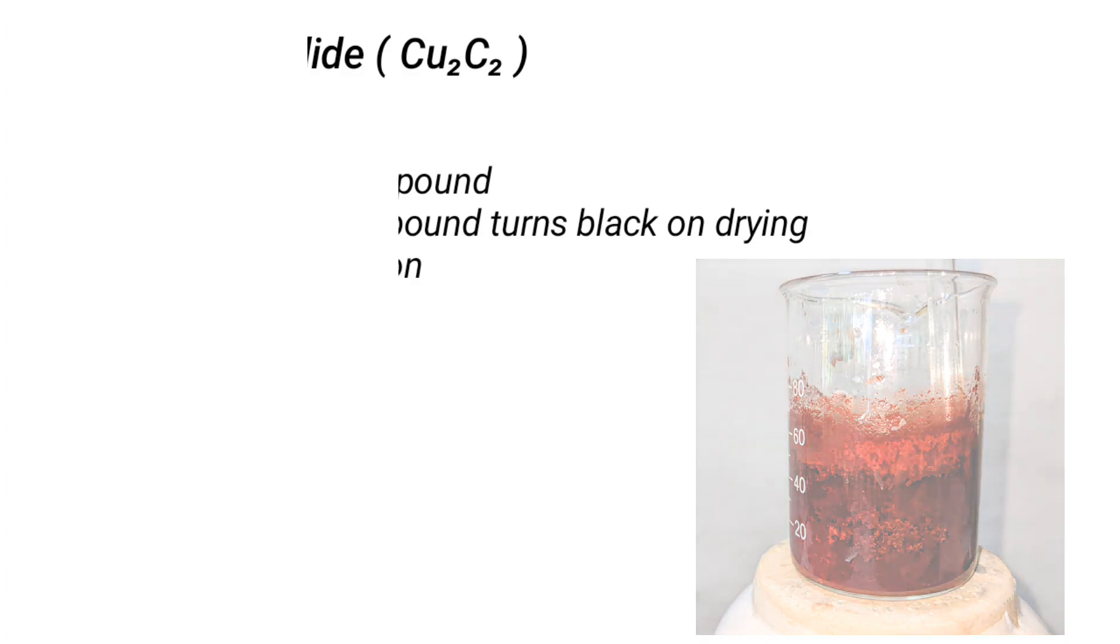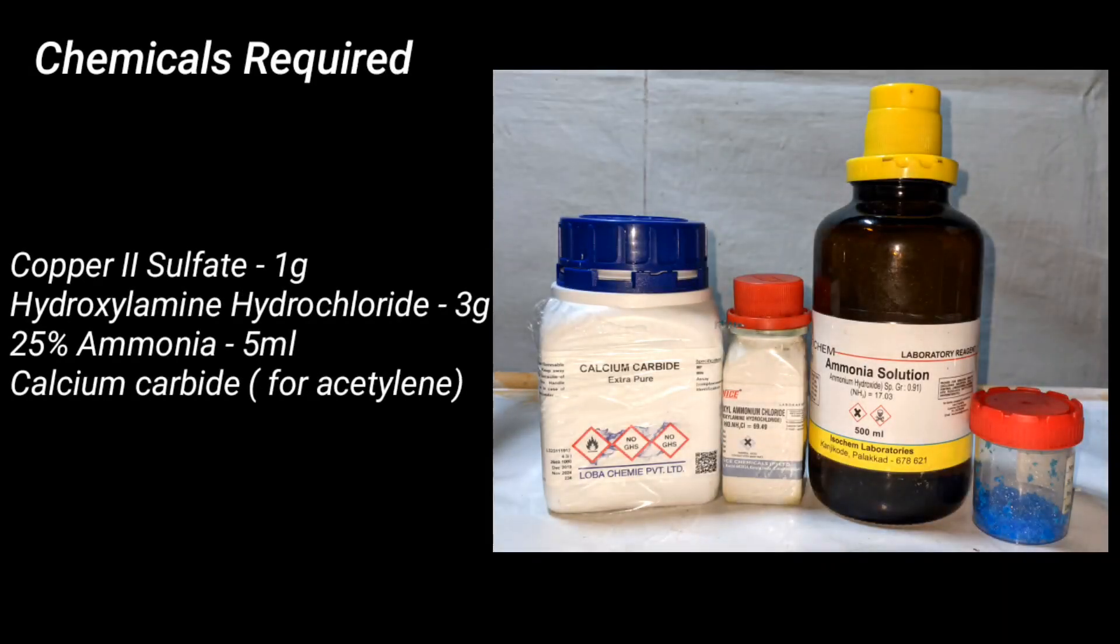Chemicals you need for this preparation include 1 gram of copper 2 sulfate pentahydrate, 3 grams of hydroxylamine hydrochloride, 5 milliliters of 25 percent ammonia solution, and calcium carbide for generation of acetylene gas.